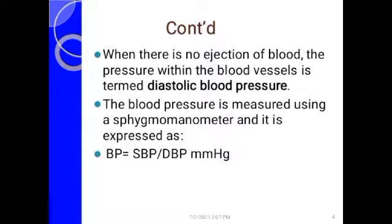When recording blood pressure, you write BP equals systolic blood pressure over diastolic blood pressure in millimeters of mercury. Systolic pressure is the pressure felt within the blood vessels when the left ventricle contracts; diastolic pressure is the pressure felt when the heart is resting with no contraction taking place. Blood pressure is measured using a sphygmomanometer — that's the BP machine we all know, either manual or digital.